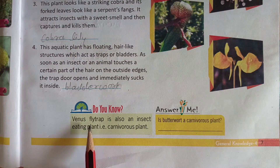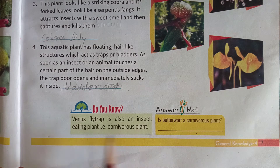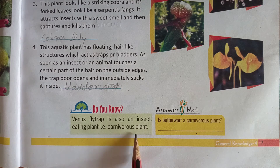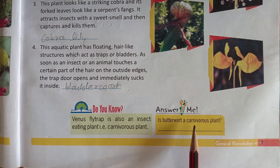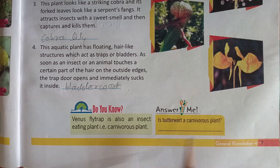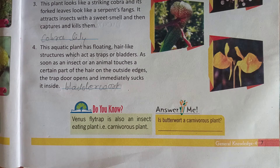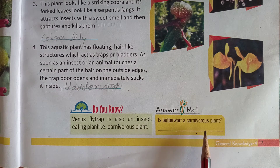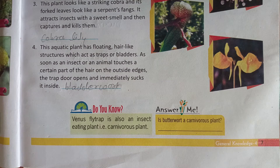Venus fly trap is also an insect-eating carnivorous plant, Masahari Paudha. Butterwort is also a carnivorous plant that traps its prey with sticky mucus and secretes enzymes to digest its prey.